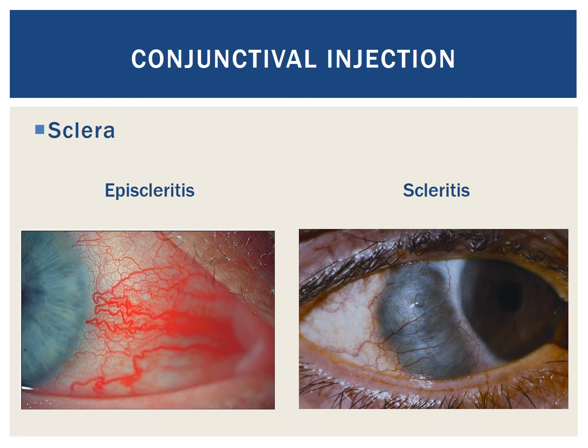Scleral pathology can also cause conjunctival injection, and this pathology may be isolated to the eye or associated with systemic autoimmune conditions. On the left, you can see superficial-appearing, sectoral inflammation of the vascular network between the conjunctiva and the sclera — this is a good example of episcleritis. On the right is an image of scleritis, which may present with focal or diffuse injection and may be associated with thinning of the underlying sclera, causing the violaceous tint visible here.